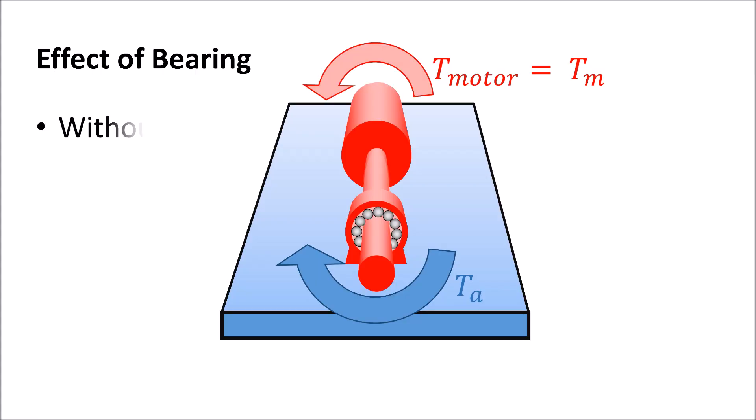Bearing without friction would not change this relationship. However, friction does reduce the torque at the axle by the amount of the friction torque.